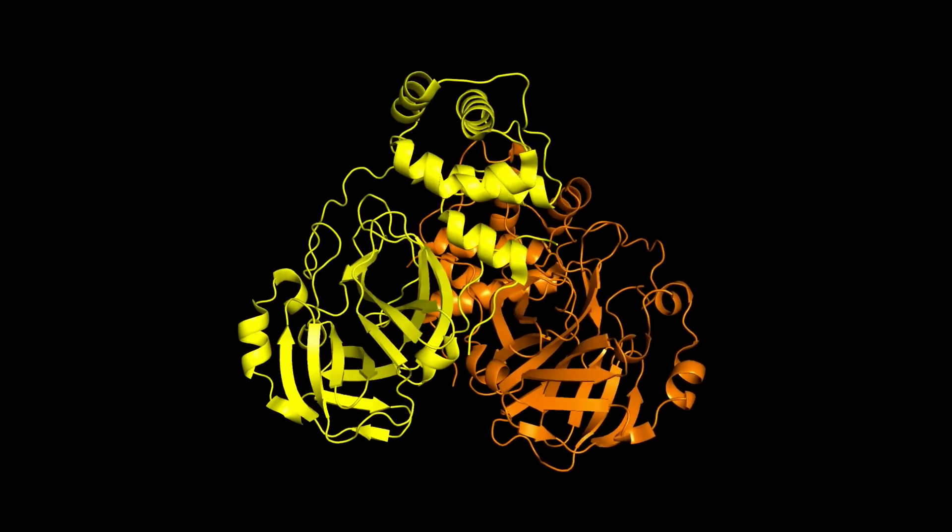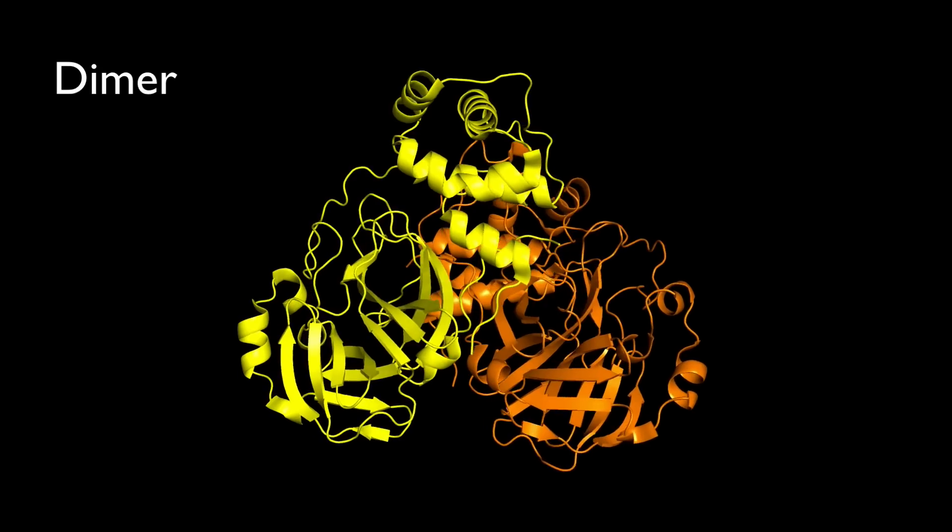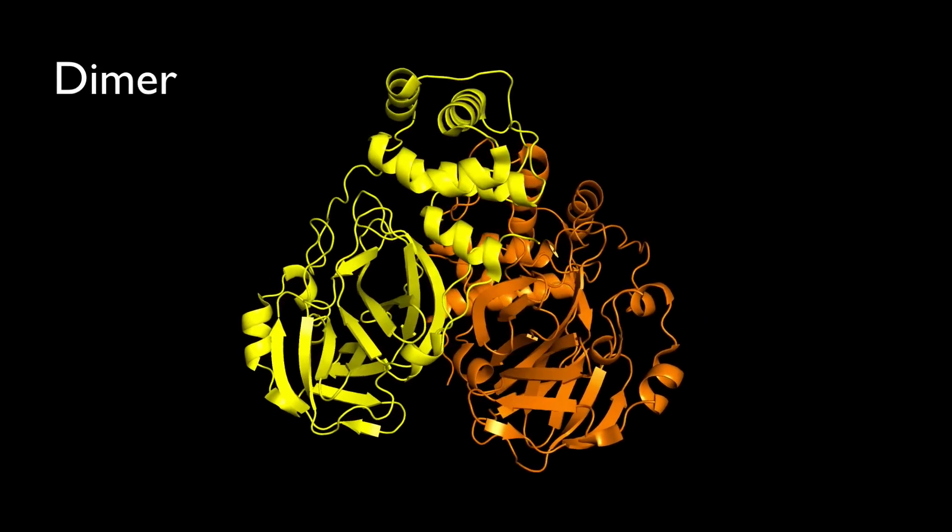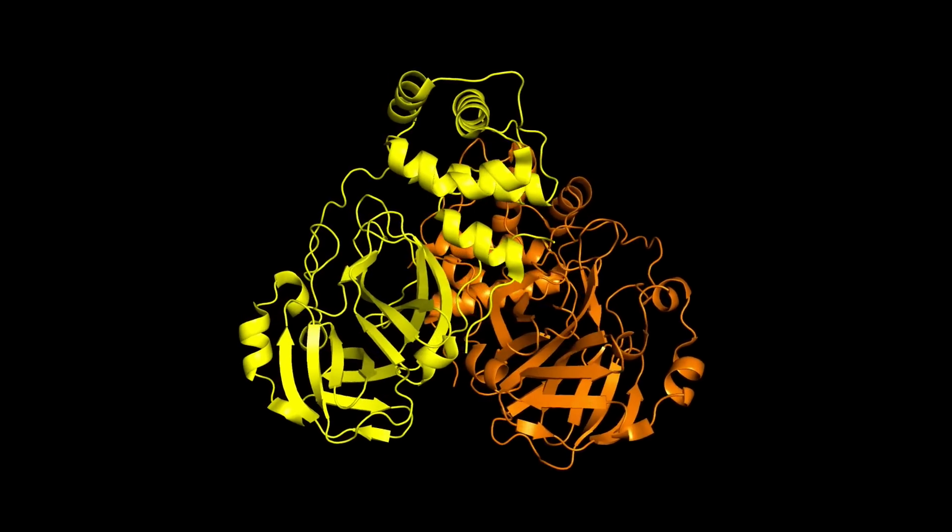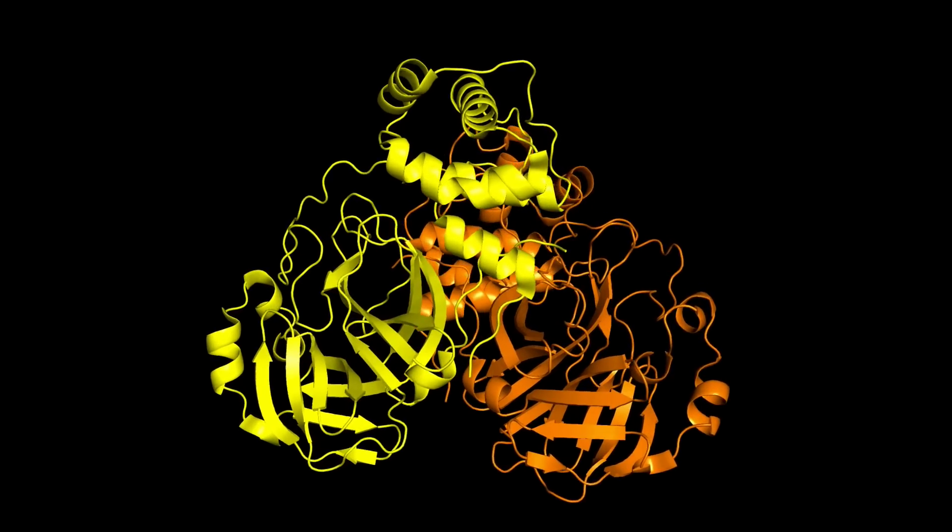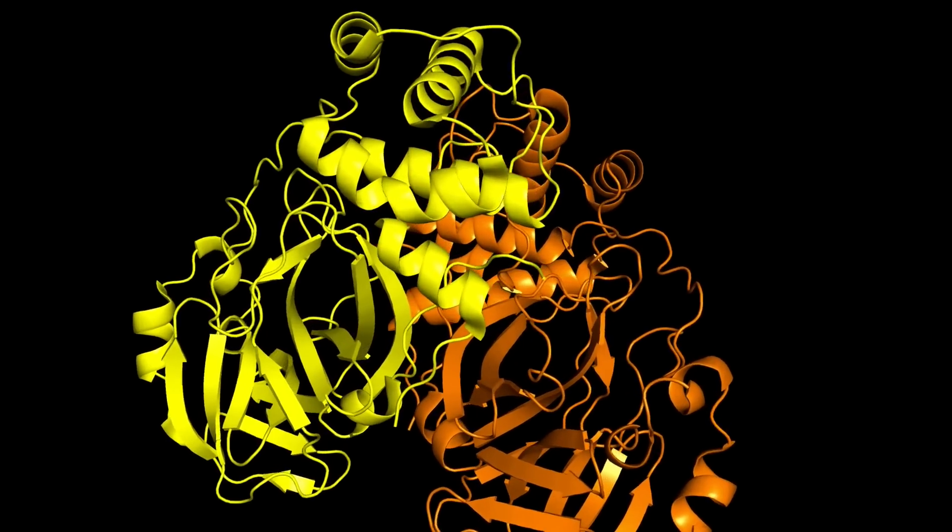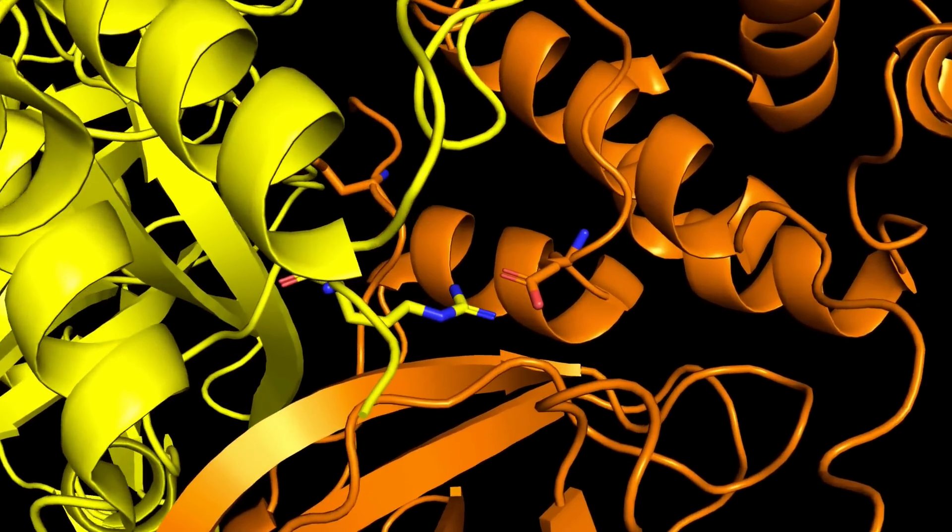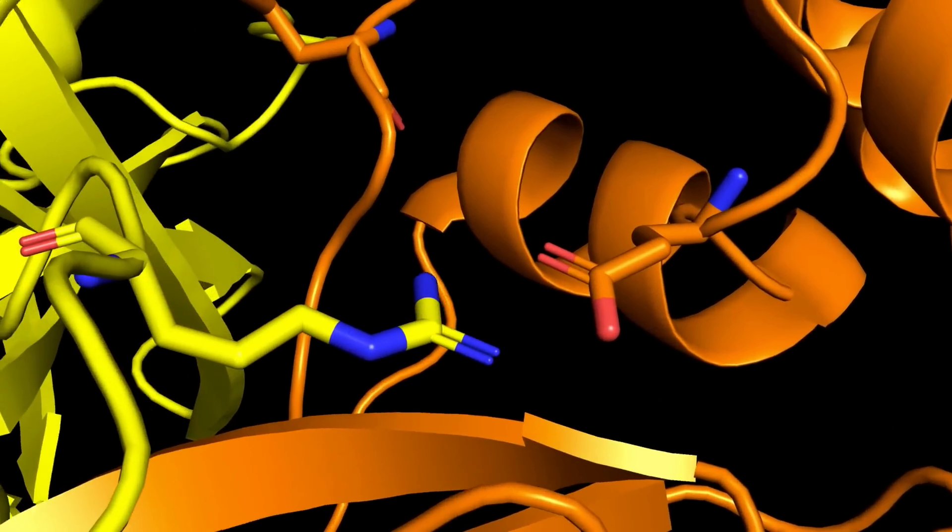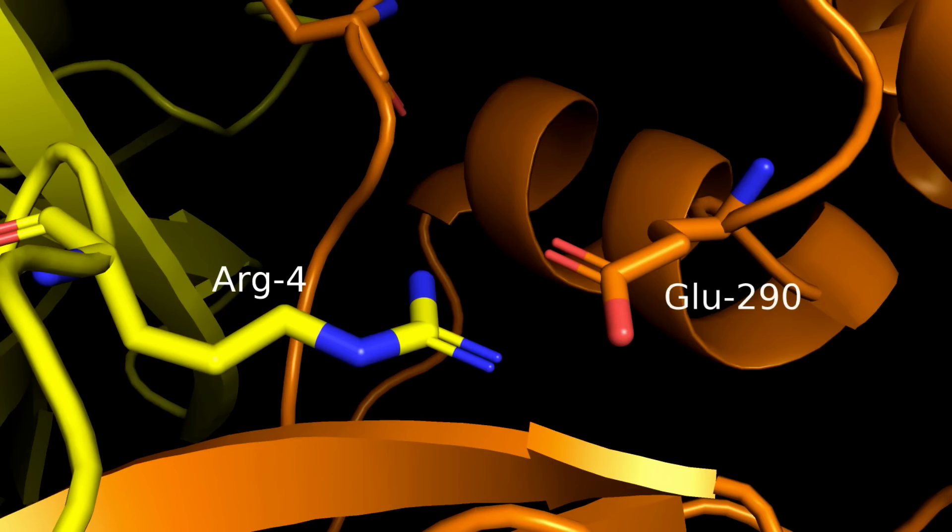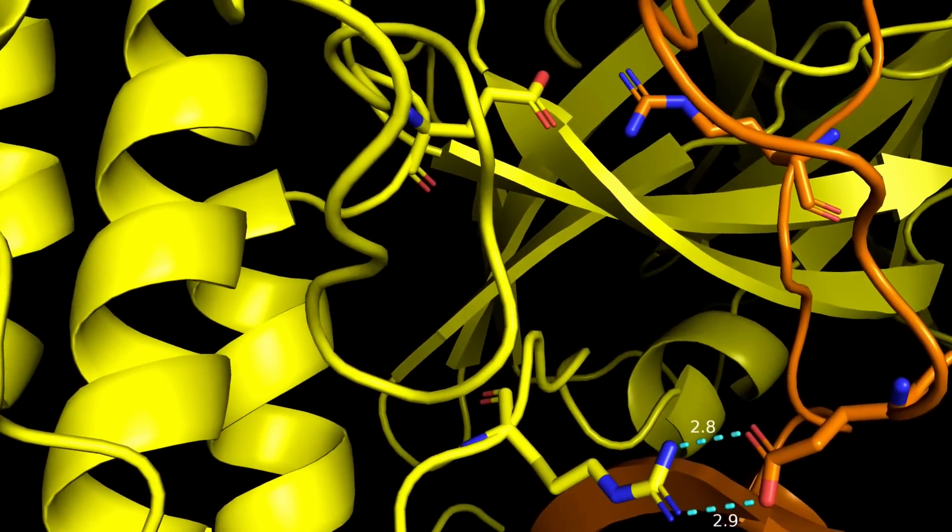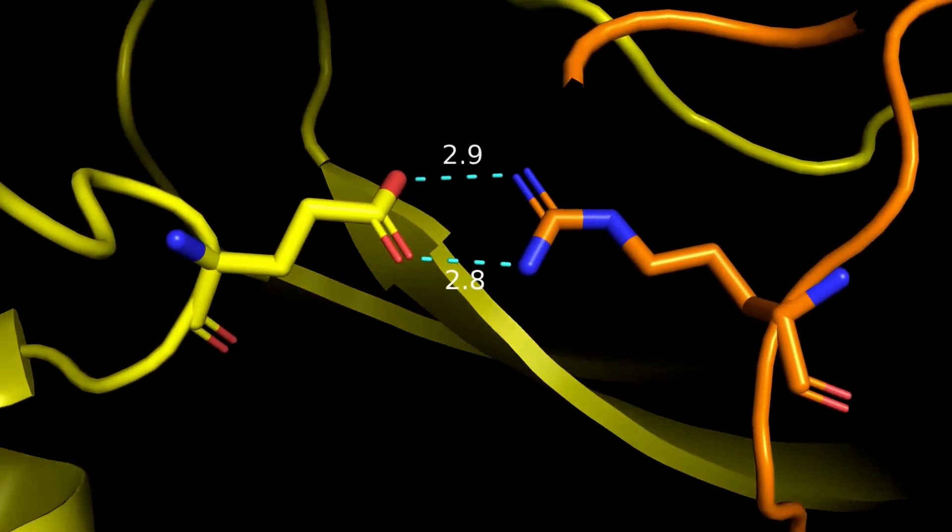This main SARS-CoV-2 protease is a dimer made up of two identical protein chains, and it must dimerize to become a functional protease. There are many amino acid interactions at the dimer interface, but the researchers that published this crystal structure suggest that the ionic interactions between the side chain of this arginine residue and this glutamate drive the dimerization. This interaction is present on both sides of the dimer.